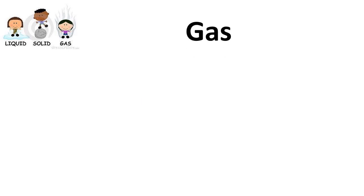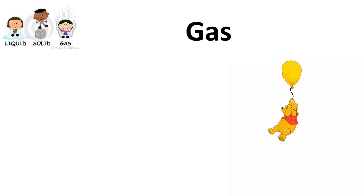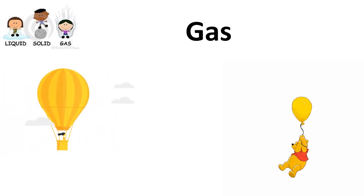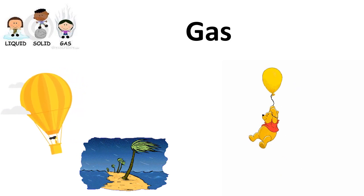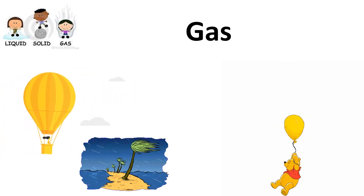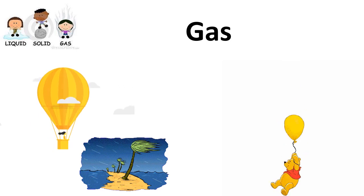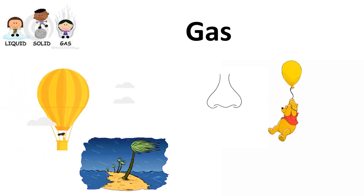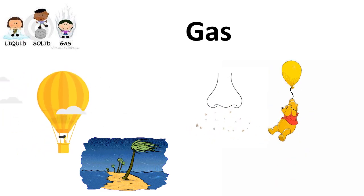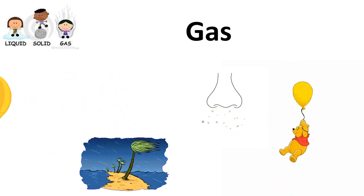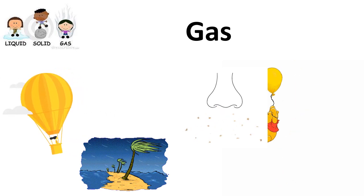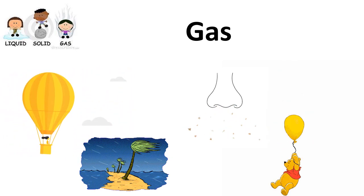The third state is gas. Like the gas in a balloon, also in a hot air balloon that we travel in. The wind that blows is also a gas. The air we breathe in and breathe out is also a gas, and all the smells that we smell with our nose are also a gas.